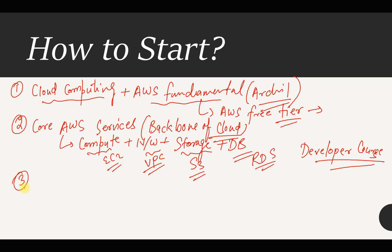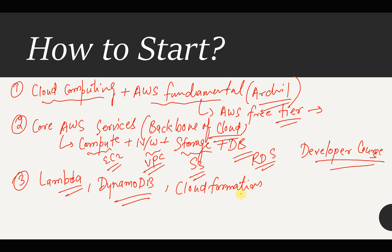Once you have an understanding of core services, you need to move further and learn other important AWS services. Here you need to learn AWS Lambda, which is serverless computing, DynamoDB, which is also very important, and CloudFormation, which helps you provision infrastructure through code — similar to a Terraform-based model. These are a few advanced services to learn after going through the core services, available through hands-on labs.